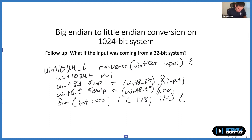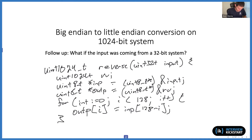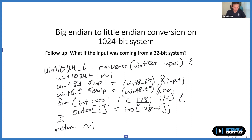For each iteration of the for loop, we place the output byte in the swapped location from the input. Once we've done that 128 times, we've finished swapping all of the bytes and can return the result. Other than using 128 as the magic number for our for loop, this is the exact same implementation as before. The other approaches — using a lookup table or masking and shifting each byte — can be applied here as well.